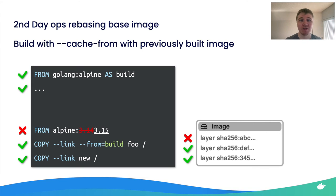When using cache-from and wanting to make your builds faster with previous cache, we definitely recommend updating your Dockerfiles to use the --link flag.